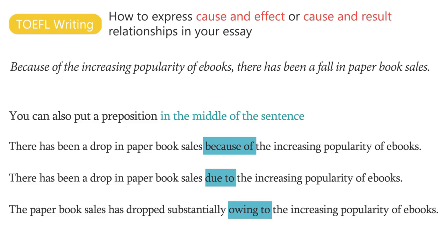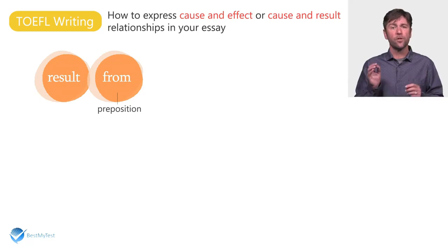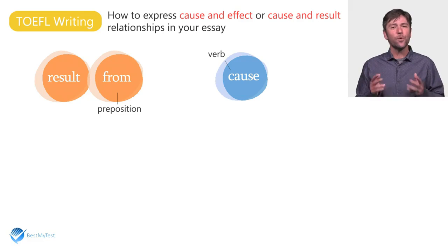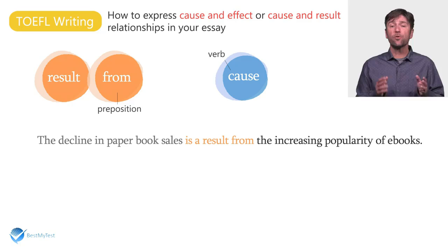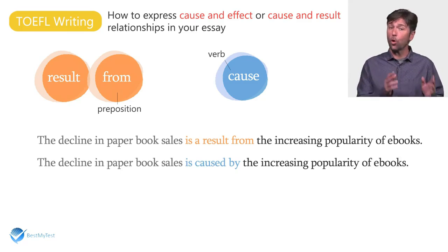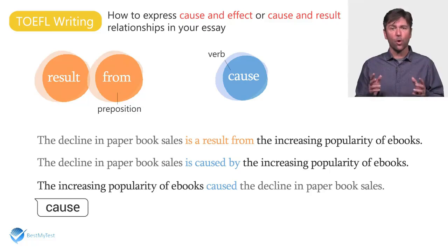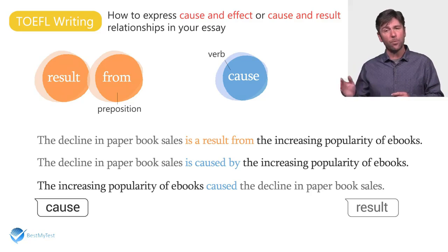If you don't want to use these prepositions, you can also use the verb result, followed by the preposition from, to introduce the cause. Or you can simply use the verb cause. For example: The decline in paper book sales results from the increasing popularity of e-books. The decline in paper book sales is caused by the increasing popularity of e-books. The increasing popularity of e-books caused the decline in paper book sales. In all three examples, the cause is the increasing popularity of e-books, while the result is the decline in paper book sales.